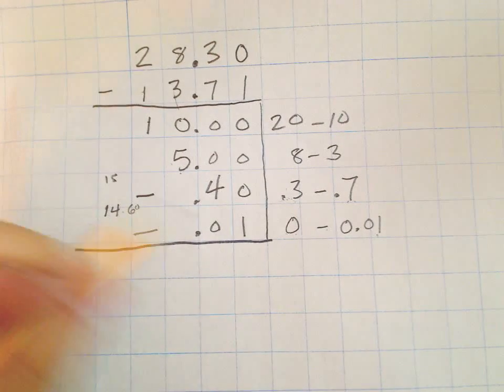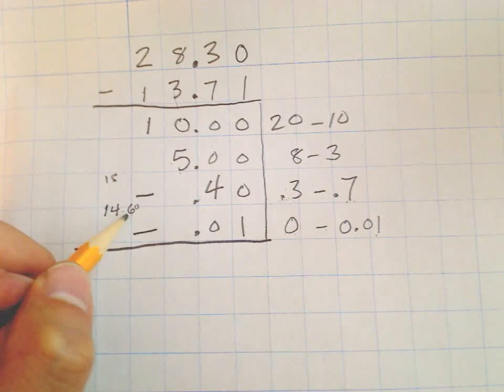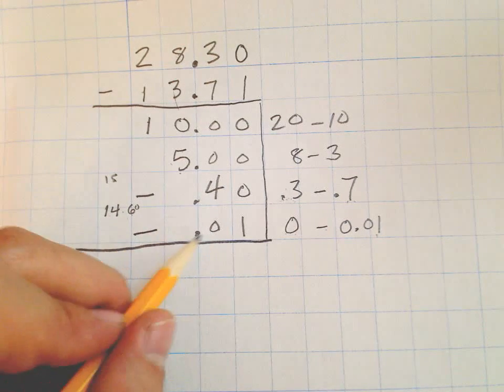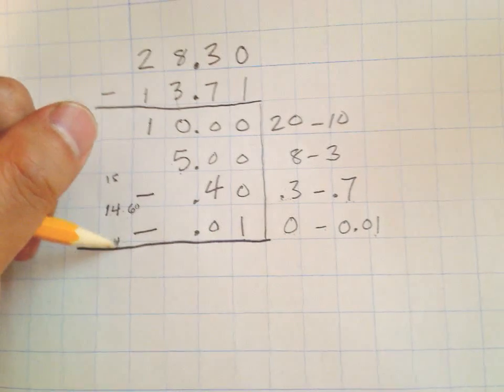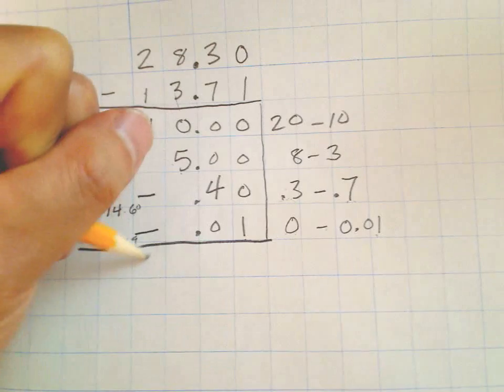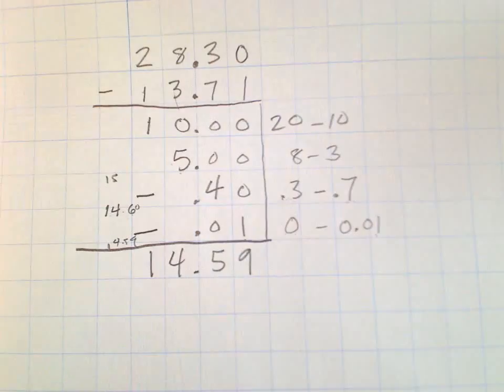Then from this point to here, 14 and 6 tenths, which also could be considered 14 and 60 hundredths, I have to subtract another hundredth. So that brings it to 14 and 59 hundredths. That's my answer: 14.59.